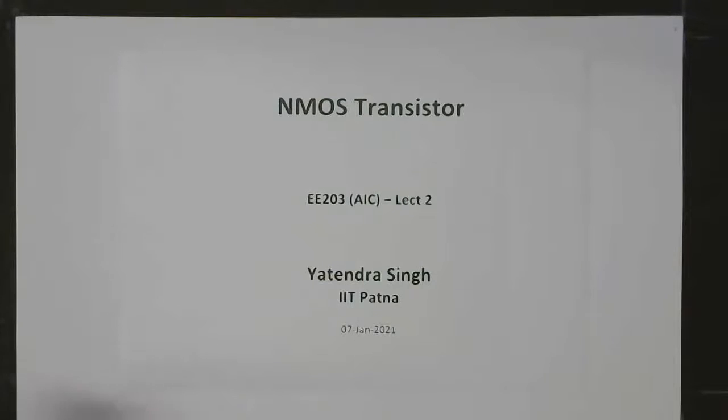Today we will visit the NMOS transistor, see its principle of functionality, and the equations governing its behavior. Unlike BJT, these NMOS transistors use only one type of charge carrier — either electron or hole — whereas in BJT both are involved simultaneously.